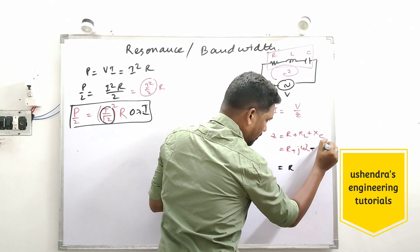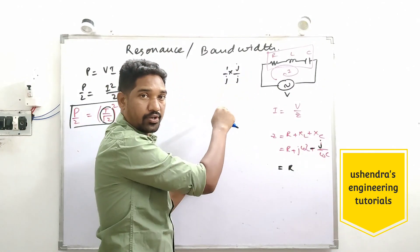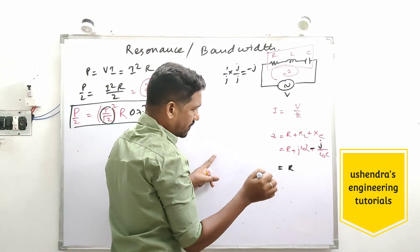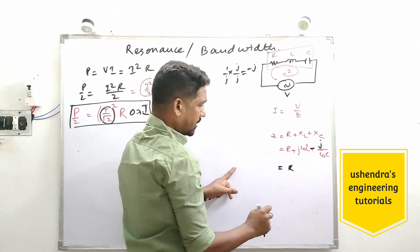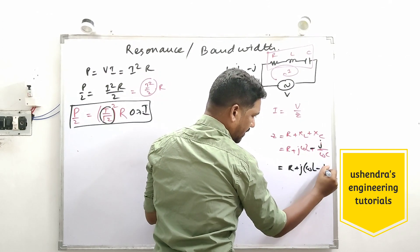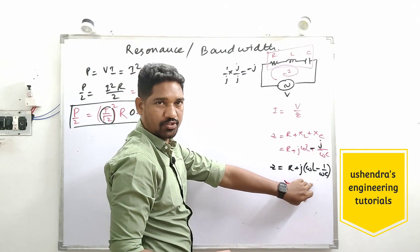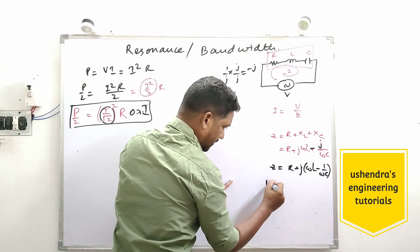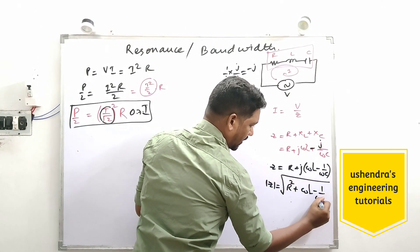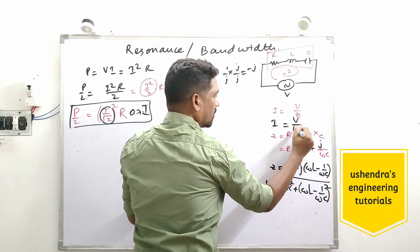A small modification: 1/(jω) can be written as −j/ω, because multiplying numerator and denominator by j gives j/(j²) = j/(−1) = −j. So Z = R + j(ωL − 1/(ωC)). This is the rectangular form. Taking the modulus: |Z| = √(R² + (ωL − 1/(ωC))²).